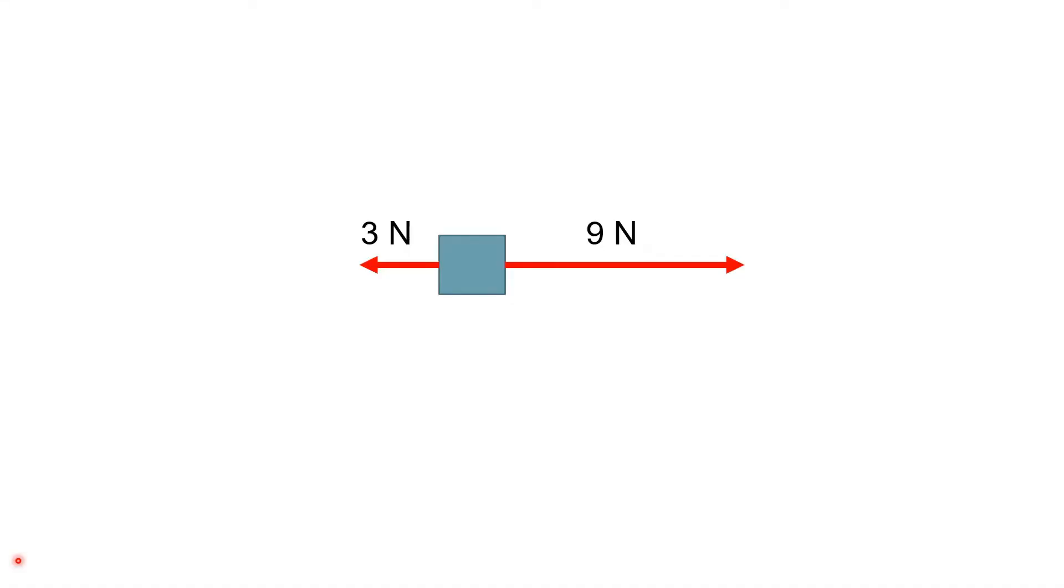So imagine we have a box with two forces acting on it. How we draw force vectors as they act on objects is you put the tail of the vector on the object, and then of course the direction shows which way that force is acting.